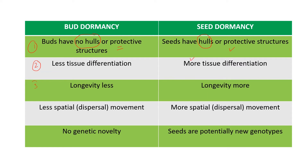In the case of buds, longevity is less. Longevity means how long they survive. The reason is that they don't have a chilka — they don't have a covering — that's why they don't survive in the harsh environment. In the case of seeds, they can survive in the harsh environment because of their hulls.